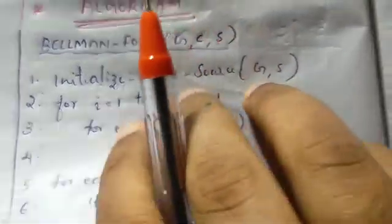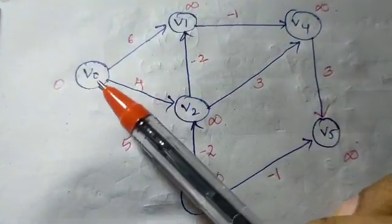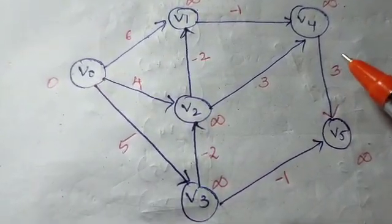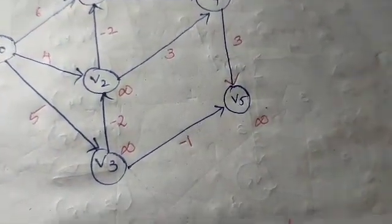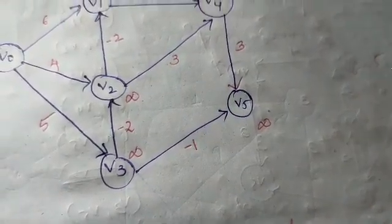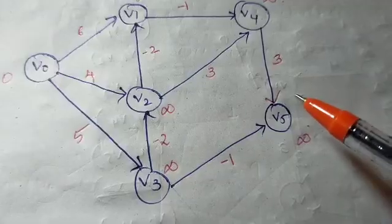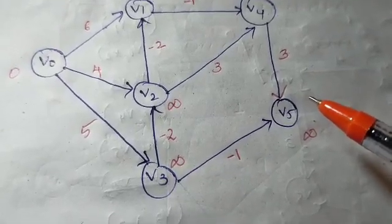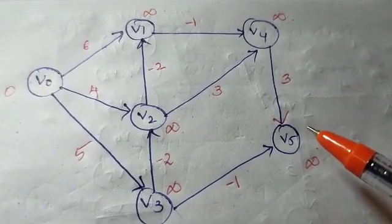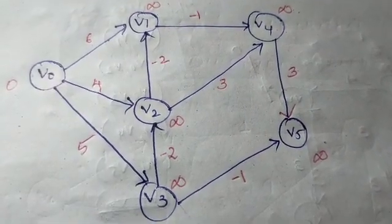Let's take an example. Our graph has vertices 1, 2, 3, 4, 5, 6 — there are 6 vertices. So we need 6 minus 1, that is 5 iterations. We take all pairs of edges and process them in order.